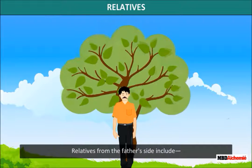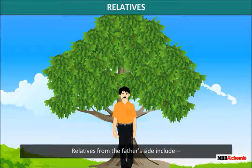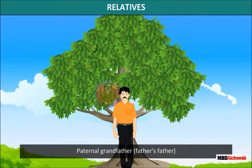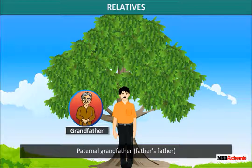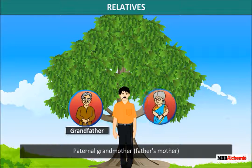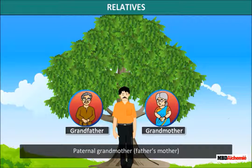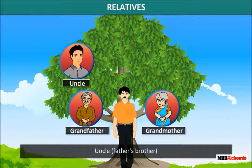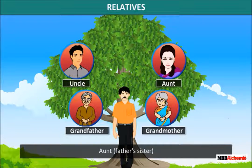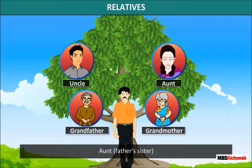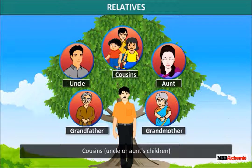Relatives from the father's side include: Paternal grandfather (father's father), Paternal grandmother (father's mother), Uncle (father's brother), Aunt (father's sister), and Cousins (uncle or aunt's children).